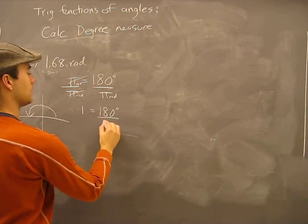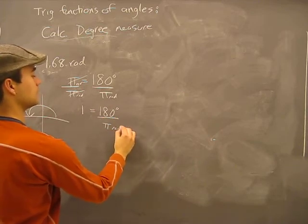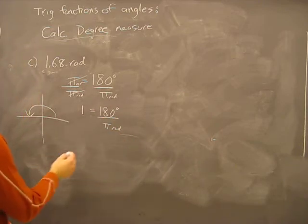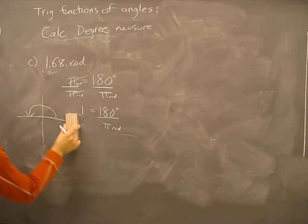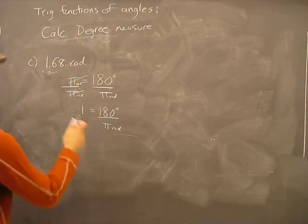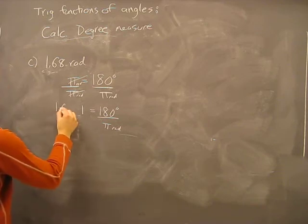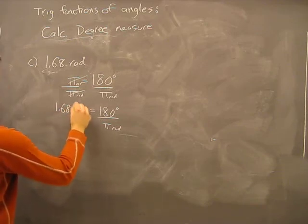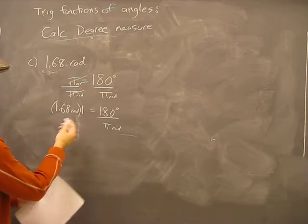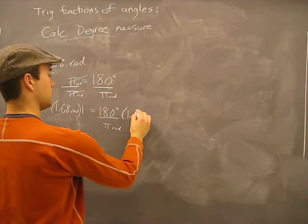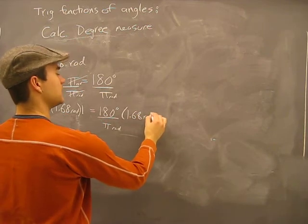Now we multiply 180 degrees times 1.68 radians. We multiply on both sides to get the radians on one side, same way as before.